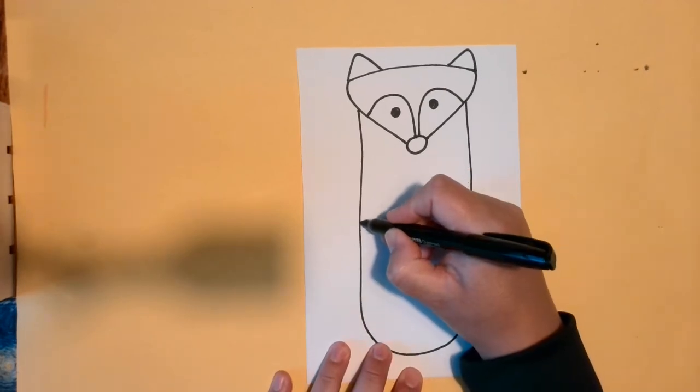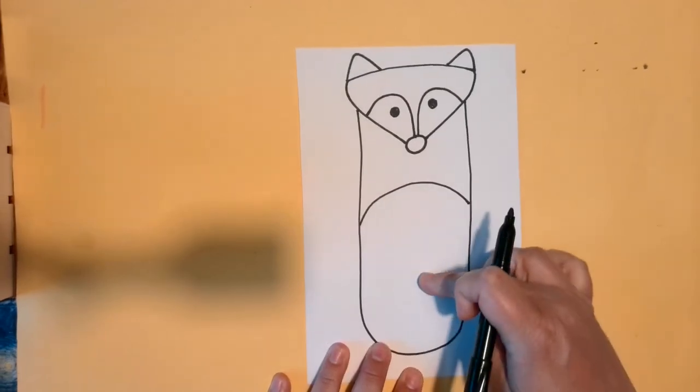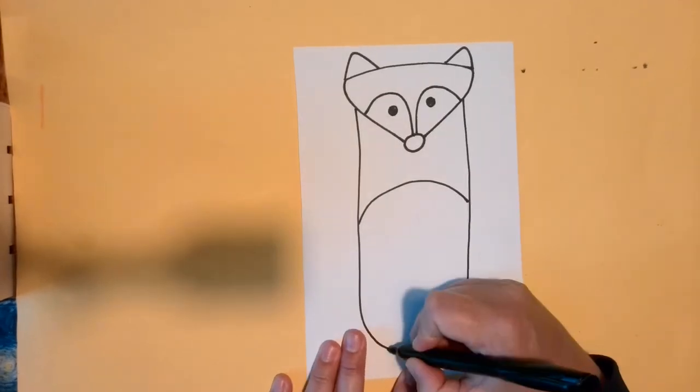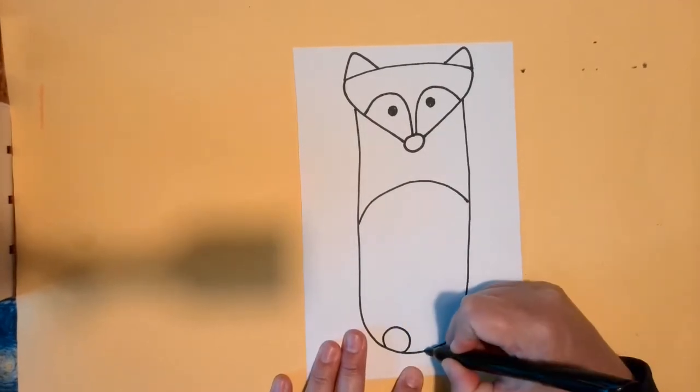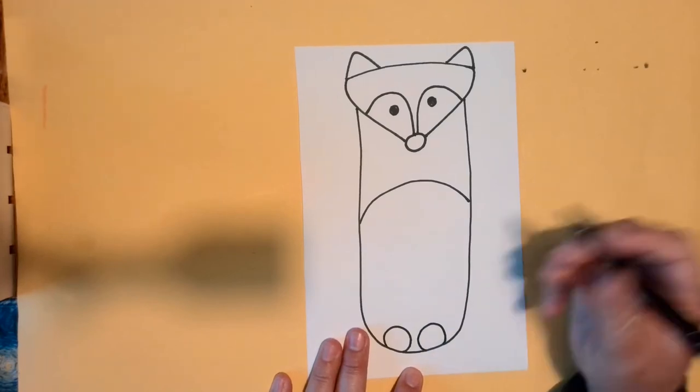I'm going to make a line across the belly, so I can leave the belly white and color the top apart. I'm going to make two ovals, or circles at the bottom, for the paws, because it's sitting down.